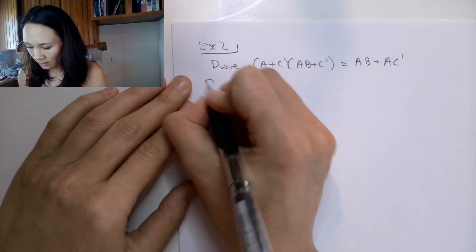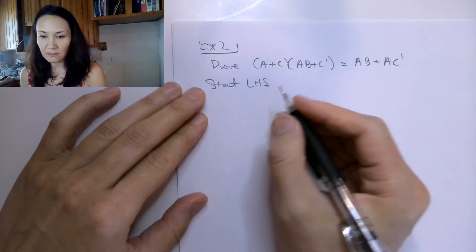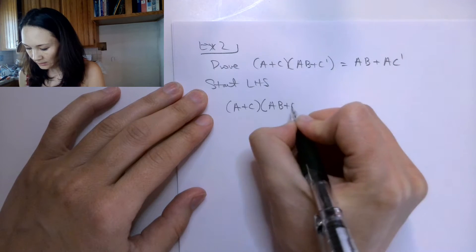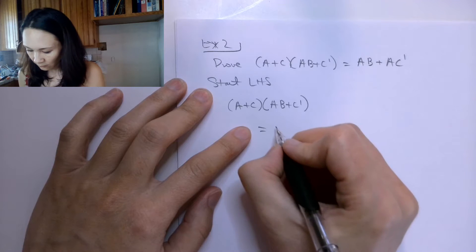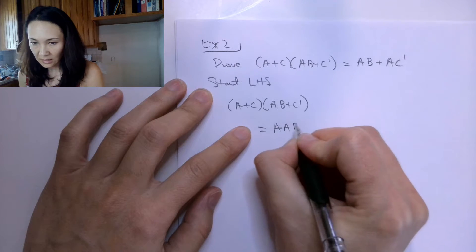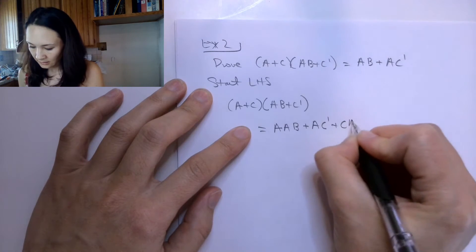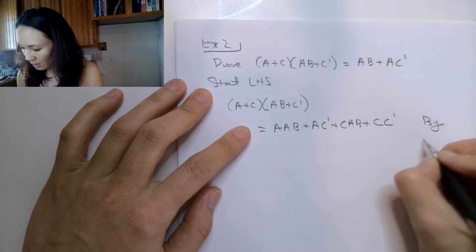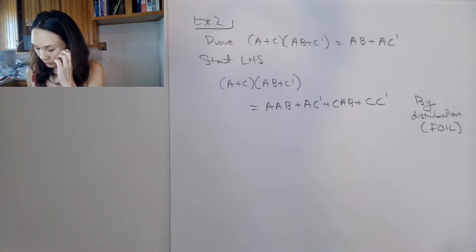So what do we do? We start with the left hand side, I'm not even going to touch the right hand side. So my left hand side is A or C handed with A, B or C naught. So this thing, if I foil it, this is going to give me A, A, B or A, C naught or C, A, B or C, C naught. And here I could put my justification by distribution, a.k.a. I just foiled it, like I learned in junior high algebra class.